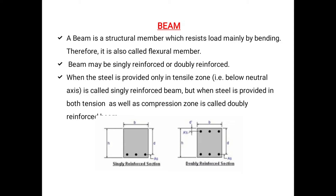If the reinforcement is provided on both sides, it is called a double reinforced section. The reinforcement is provided on both the tension zone and the compression zone. That is called double reinforcement.